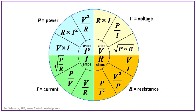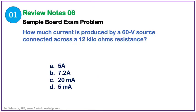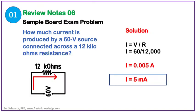Here is our problem for this review note: How much current is produced by a 60V source connected across a 12kΩ resistance? The problem looks simple, because it's a series circuit and a simple Ohm's Law application is needed. We have a given: a voltage source of 60V and a 12kΩ load, asking for the total current flowing in mA.